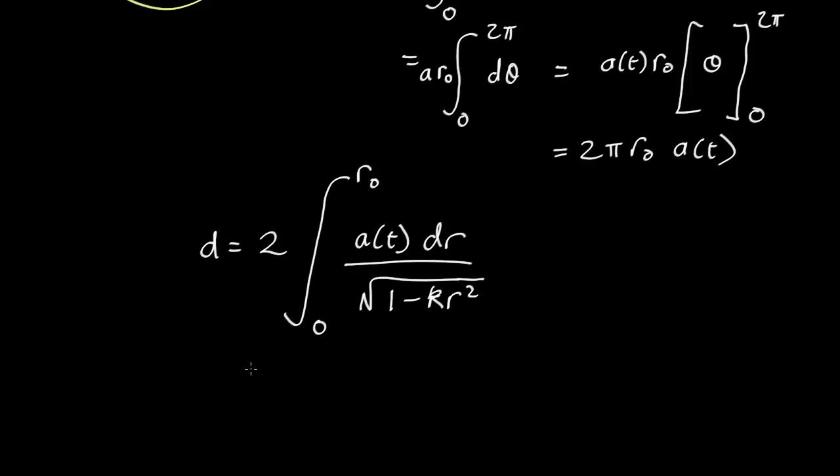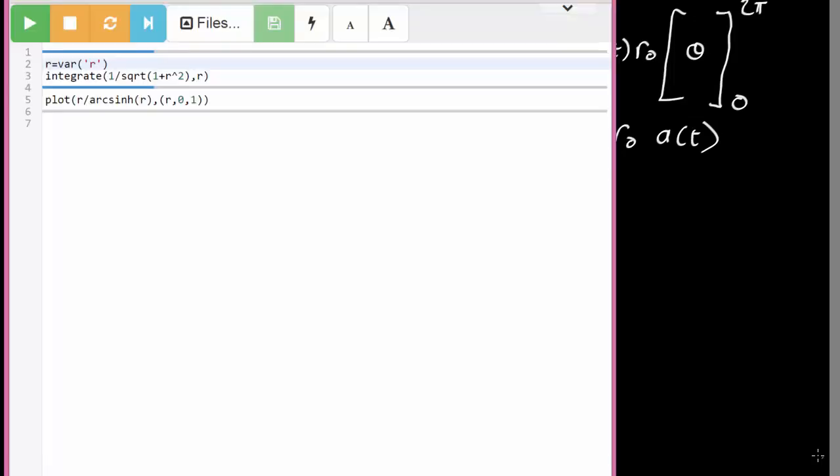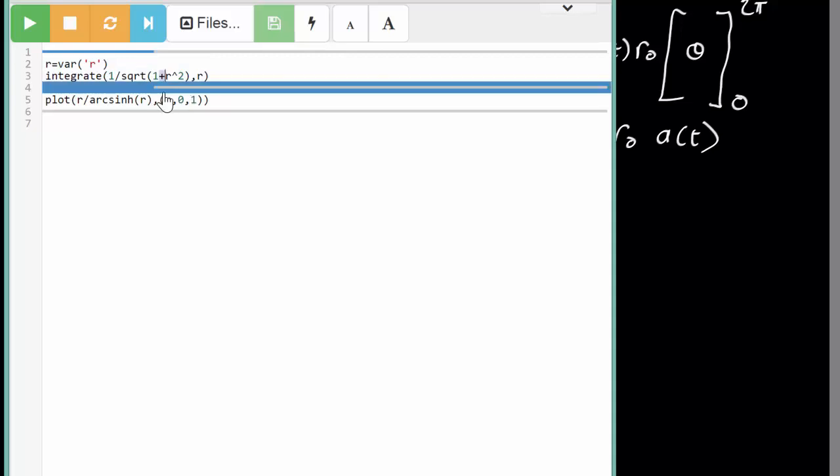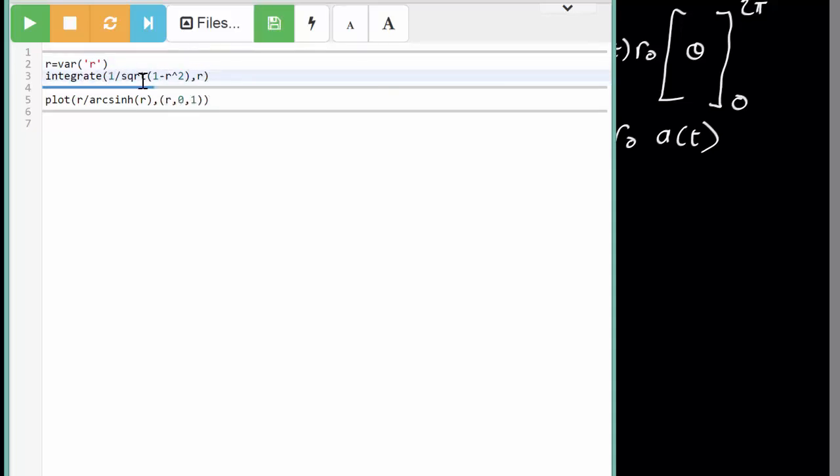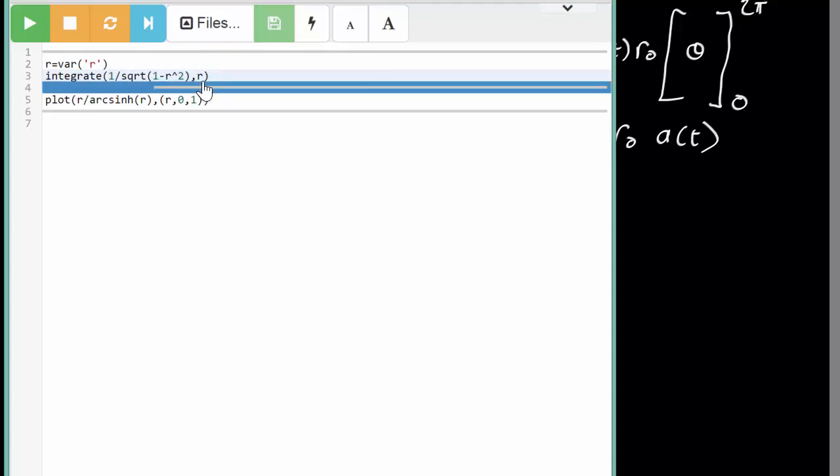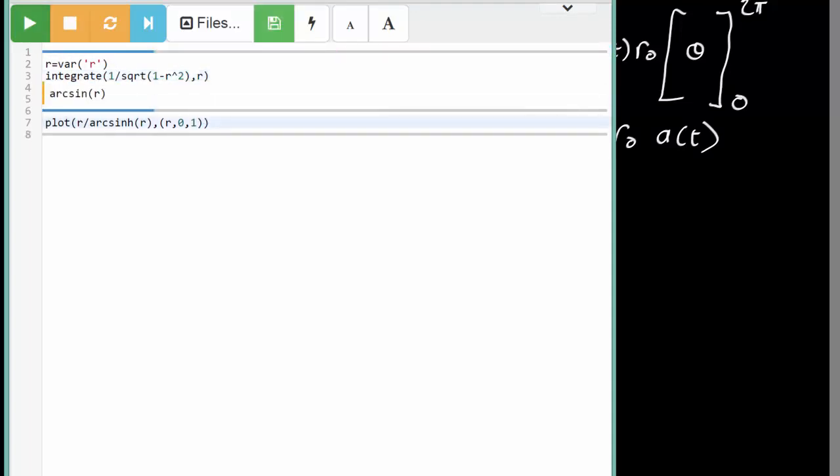How do we do that? Well we cheat. We look it up on an online website or we use a computer algebra tool and that's what I'm going to use here. So this is a free online computer algebra tool using the sage open source computer algebra system sagemath.com you can use it yourself. What I've done here is I've defined a variable r and then in this case let's take it for k equals 1 in which case this is going to be a minus sign in here. We're just integrating 1 over the square root of 1 minus r squared as a function of r and if you press go we find it comes out as the arc sine of r.